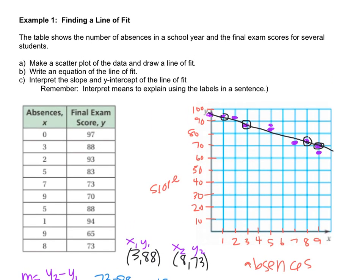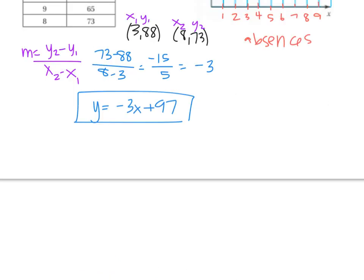Do I have to do anything in there? Oh, I have to interpret the slope and intercept. And it gives me this remember phrase, interpret means to explain using the labels. So I need to interpret the slope and the intercept. I'll do the intercept first. It doesn't matter which one you do first. 0 and 97.